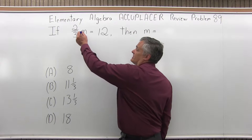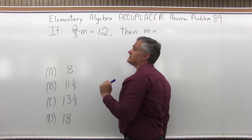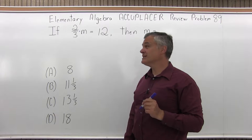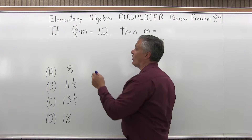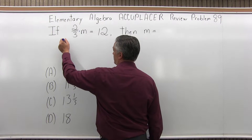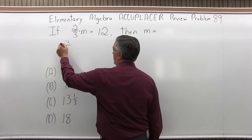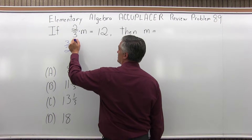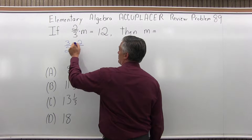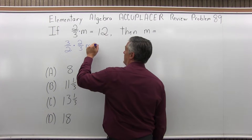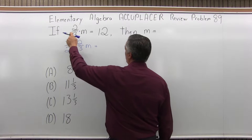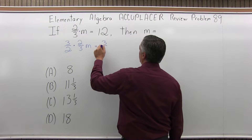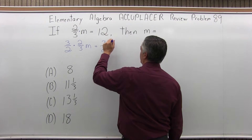There's no operation indicator, but it's really two-thirds times m, and I want to get rid of that. Well, since I can do anything I want as long as I do it on both sides, let me write the reciprocal: three-halves times two-thirds m equals — if I multiply by three-halves on one side, I have to multiply by three-halves on the other side.